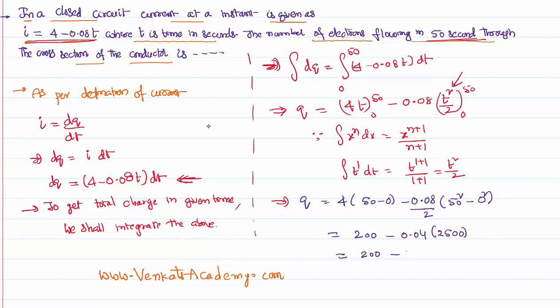Get it as 200 minus 4 into 0.04 can be written like 10^(-2), 25 into 100 can be written like 10^(+2). This plus 2 and minus 2 can be cancelled. 4 into 25 is 100. 200 minus 100, that's nothing but 100 coulombs. So the charge that you have got in this problem is 100 coulombs.